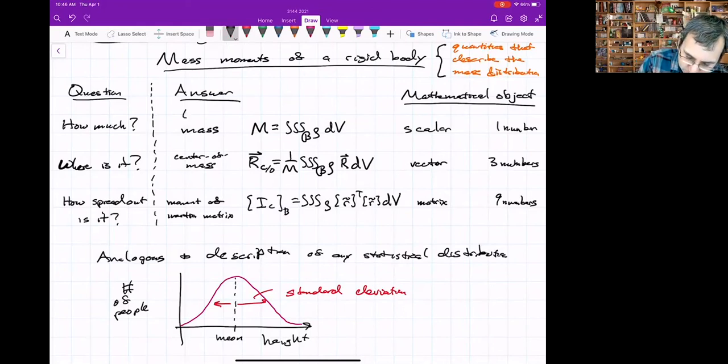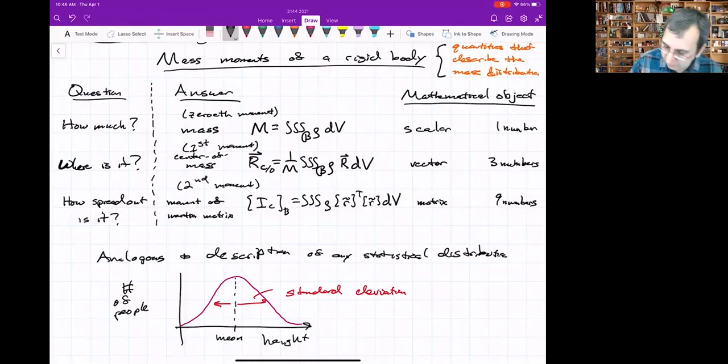So the mass up here would be zeroth moment. Center of mass is the first moment. Moment of inertia is the second. And it matches up with the number of numbers in this mathematical object. A scalar is three raised to the zero. A vector is three raised to the one. And a matrix is three raised to the two.